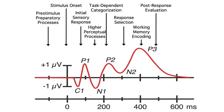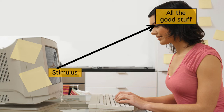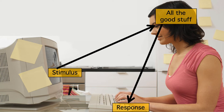This allows us to measure the brain processes that occur between the stimulus and the response, instead of just measuring the behavioral response that comes at the end of these processes. In a typical button press task, the stimulus appears on the screen, goes into the subject's eyes, and then all the good stuff happens that we actually want to understand. While all that good stuff is happening, we get no information from behavioral measures — nothing. But after all the good stuff has happened and the brain has figured out what the stimulus is and what response should be made, we finally get a button press.